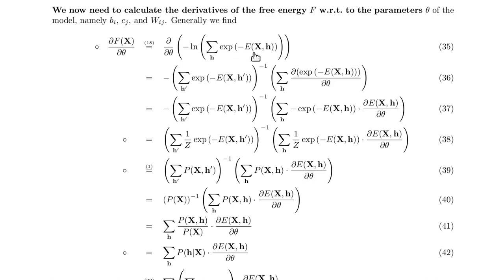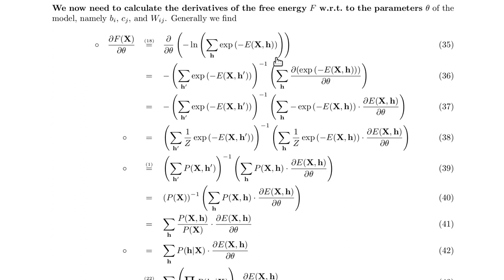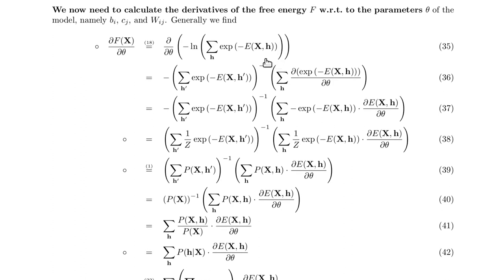Because of the logarithm we take the outer derivative, which is 1 over the argument — the power of minus 1 — and the inner derivative. Again we take the outer derivative times the inner derivative: that's the exponential, which stays an exponential. Then we take the inner derivative of minus E with respect to theta, and that is this part together with this minus sign.